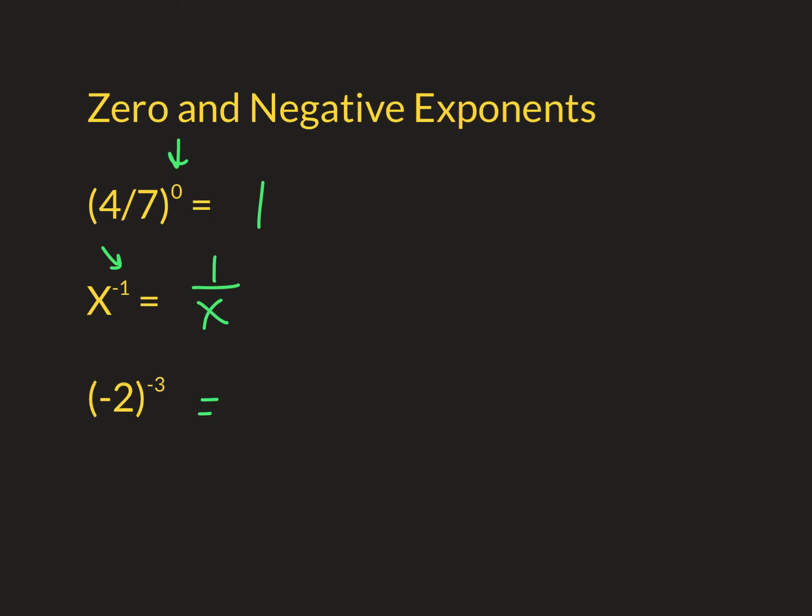This one, negative two to the negative three power, is really this. It's really one over negative two cubed. And because the three is outside the parentheses, it goes for the negative sign. But because it's odd, it stays negative. So it's going to stay negative eight. So it's just negative one eighth there.